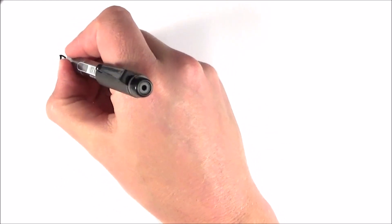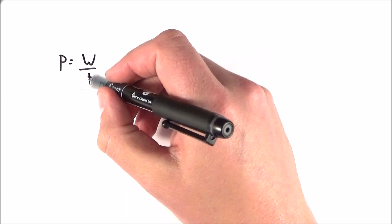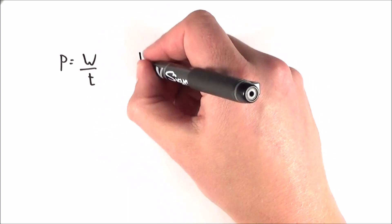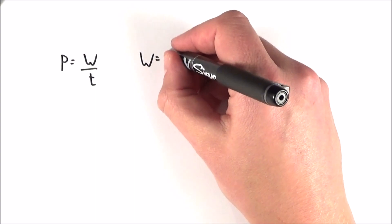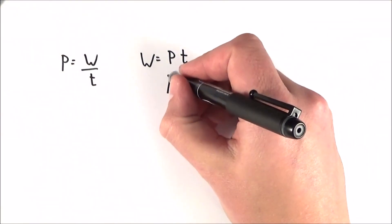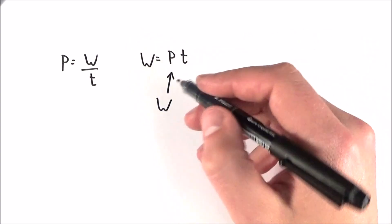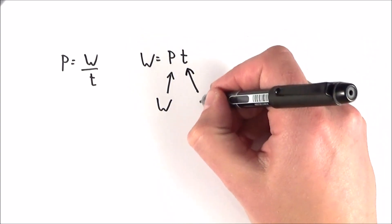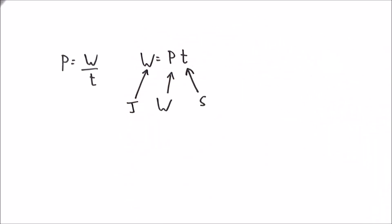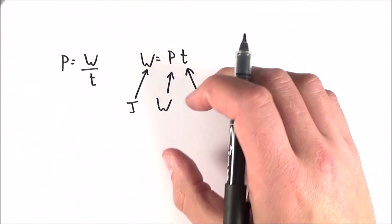Electrical power is the rate at which work is done. If we rearrange this equation to make W, the work or energy transferred, the subject, we can say that work done is equal to power multiplied by time. Normally we measure power in watts, which is the SI unit — joules per second — and we measure time in seconds, giving us energy in joules.